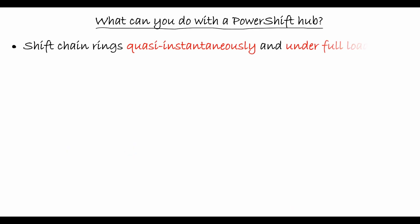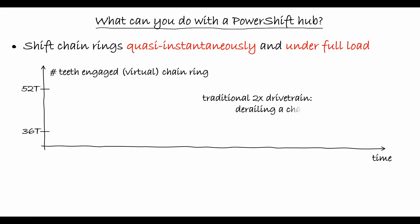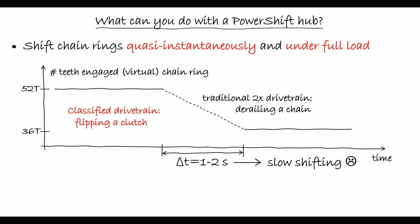A second advantage of the PowerShift Hub relates to the time and load required for shifting between chainrings. In traditional front derailleur systems, shifting between chainrings needs to proceed carefully under no load and takes up to 2 seconds. In the PowerShift Hub instead, thanks to Classified's ultra-fast clutch mechanism, shifts can happen under full load and take less than 150 milliseconds to complete, without the risk of dropping your chain.